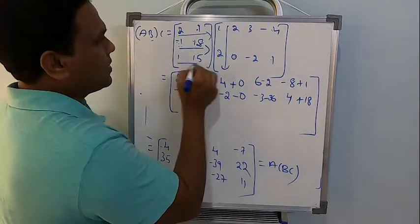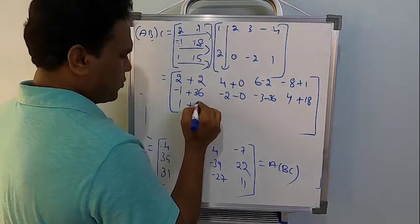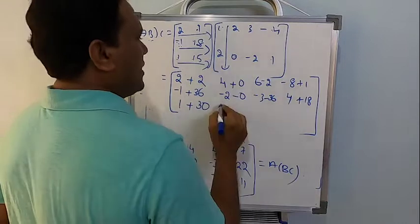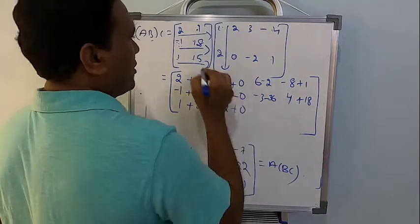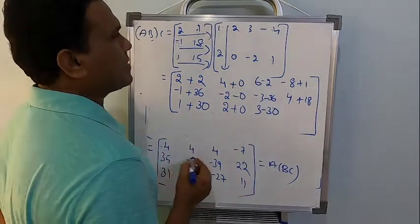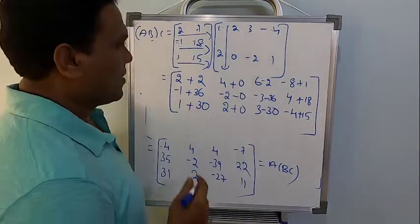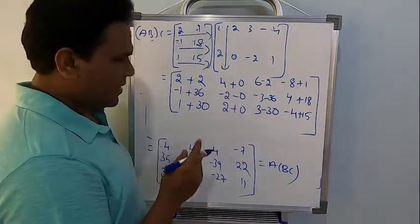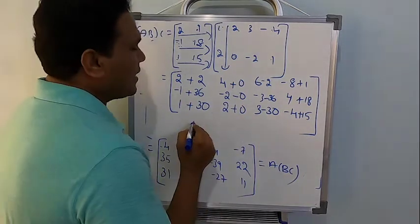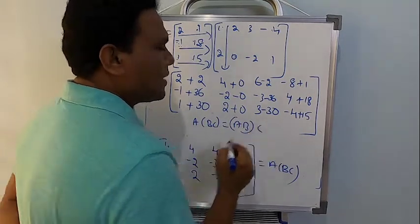Last row, first column: 1 multiplied by 1 is 1, plus 15 multiplied by 2 is 30. Next: 1 multiplied by 2 is 2, plus 0. The next: 3, minus 30. The next: minus 4, plus 50. Upon simplifying, I am going to get the same matrix as what was done for the left side. So finally, I can come to a conclusion: A multiplied by BC is equal to AB multiplied by C. It is a standard property - matrix multiplication is always associative.